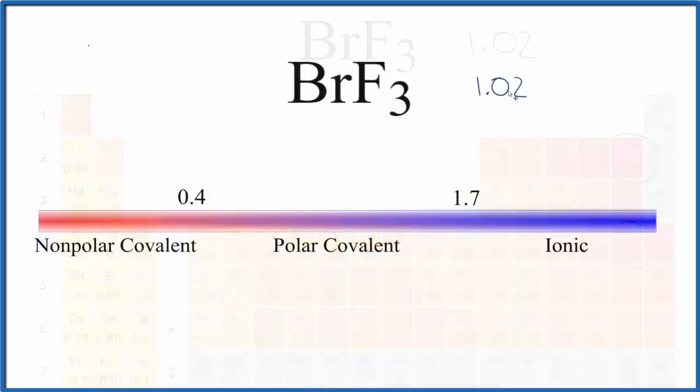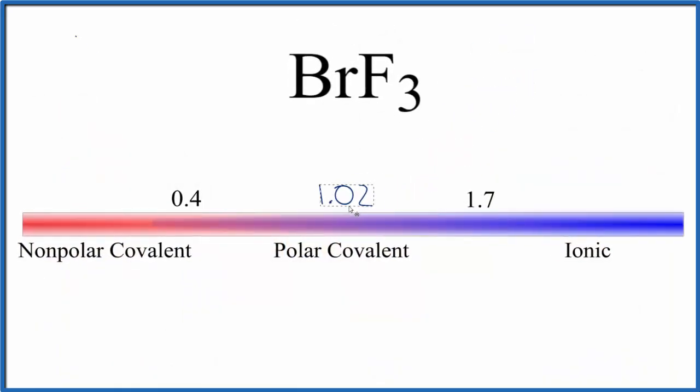Let's see what that means. So 1.02, that's about right here on our scale. So BrF3 is a covalent compound based on electronegativity, the difference in electronegativity between the Br and the F atoms, the bromine and the fluorine atoms.